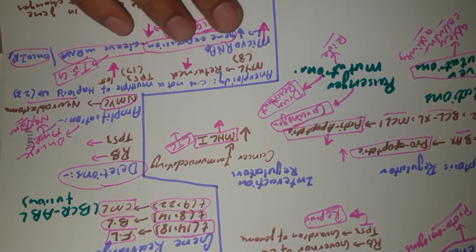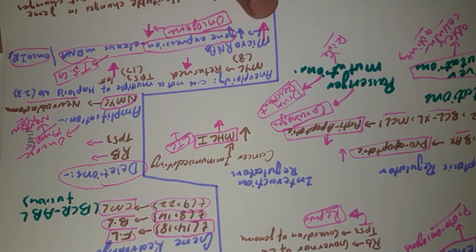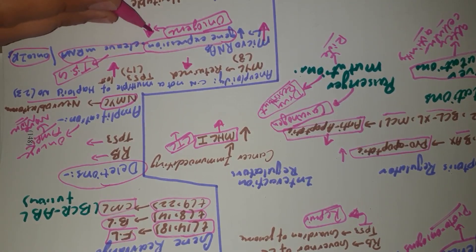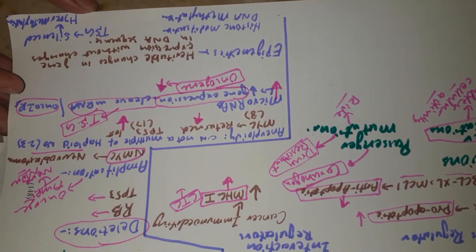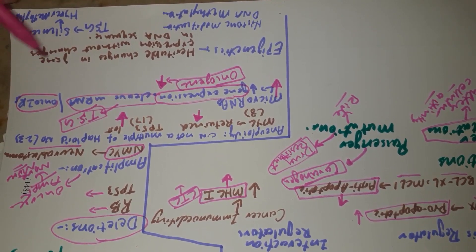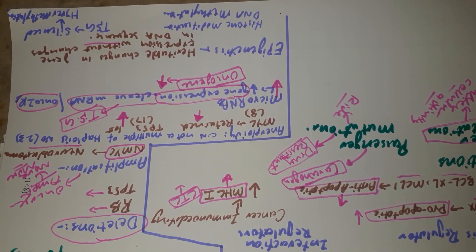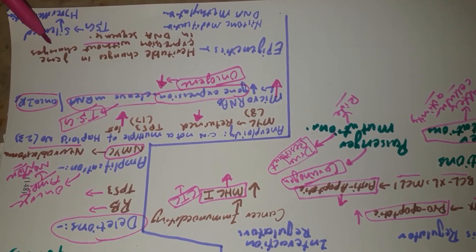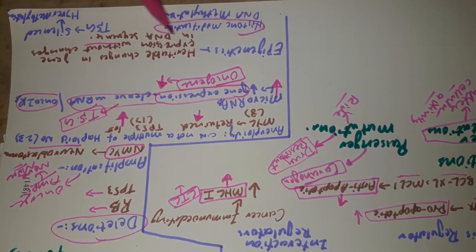MicroRNAs can contribute to carcinogenesis by failing to regulate tumor suppressor genes or by being down-regulated themselves, thereby promoting up-regulation of oncogenes. Moreover, epigenetics also contributes to cancer development. Epigenetics is basically a set of heritable changes in gene expression without changing the DNA sequence — changes inherited by offspring cells that manifest in the form of histone modification or changes in DNA methylation.